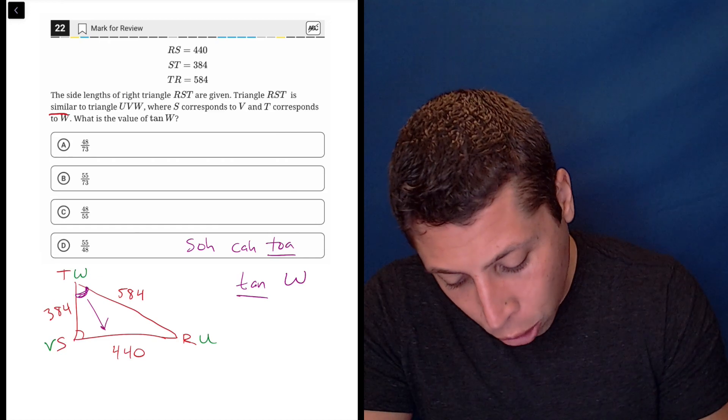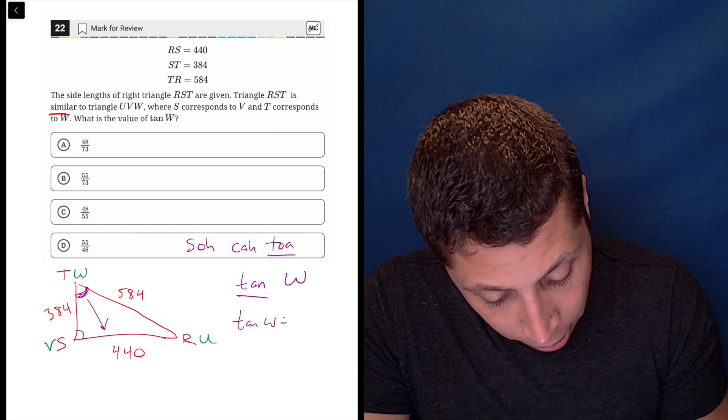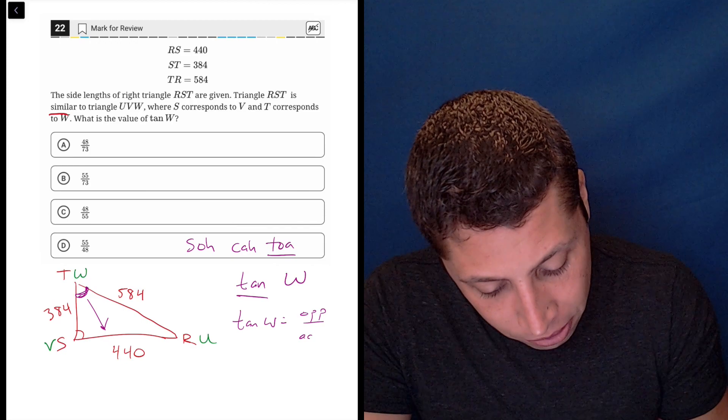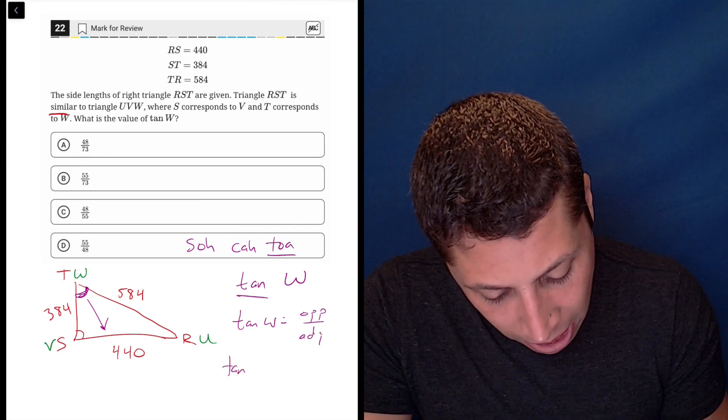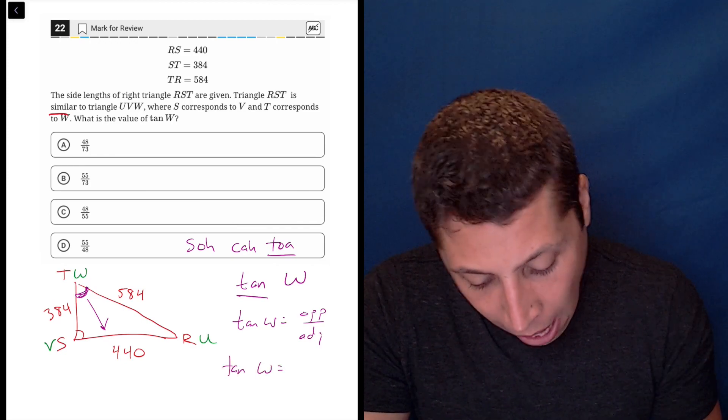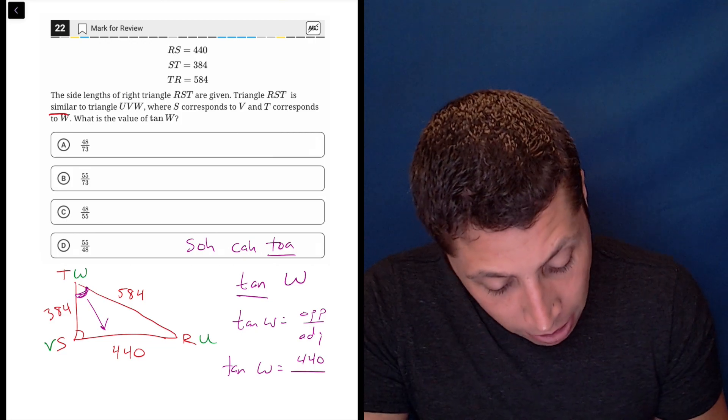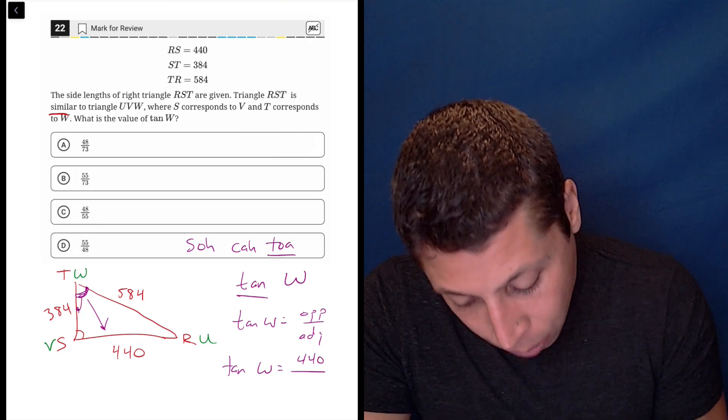Opposite means we go across, so let's even do this. Tan of W is equal to the opposite over the adjacent. So tan of W, the opposite is the 440 and the adjacent is the one that's right next to it.